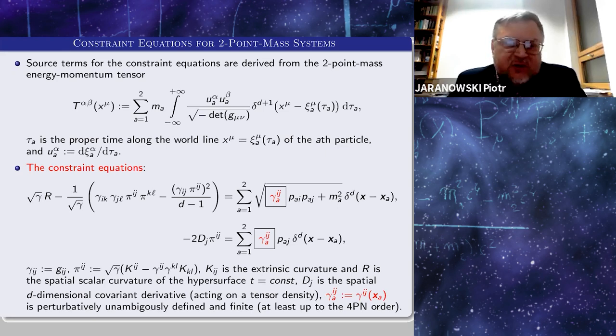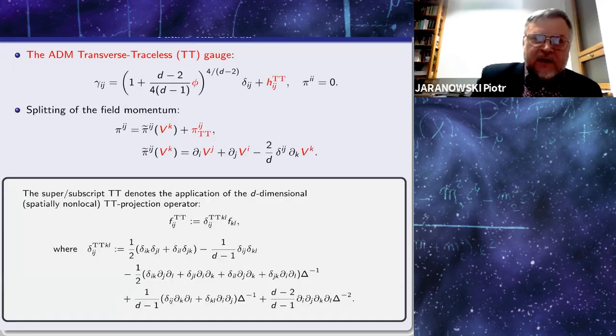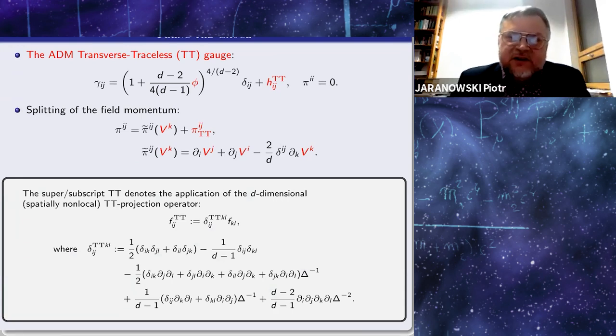The story begins from the constraint equations, which are written here for the system of two-point masses. We use the ADM transverse traceless TT gauge in which the space-like metric is the sum of the TT part and some isotropic part, which is parametrized by the single function phi. The field momentum, which is conjugate to the space-like metric, has its Euclidean trace equal to zero—this is the second gauge condition. One splits the field momentum into its longitudinal and TT part, and the longitudinal part can be expressed in terms of one vectorial quantity.